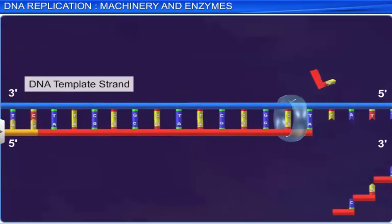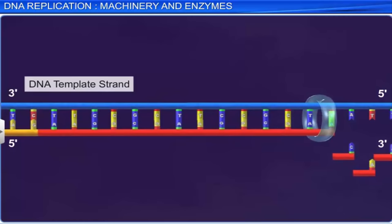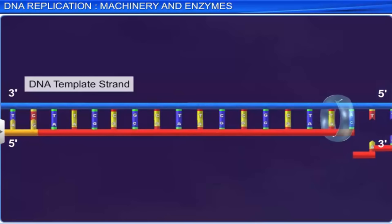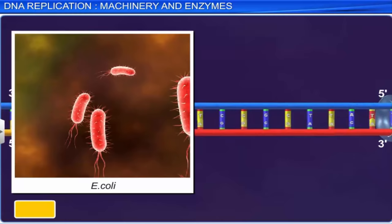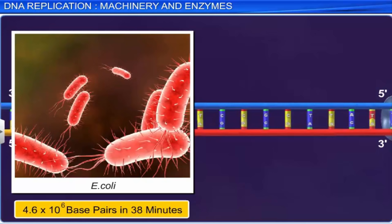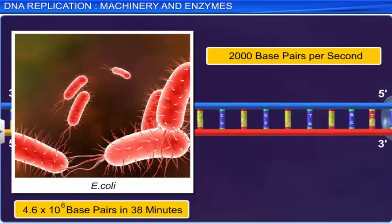The DNA replication process requires a high degree of accuracy, because any error during replication will result in mutations. Thankfully, DNA polymerase is a highly efficient enzyme that catalyzes the reaction not only with accuracy but also very swiftly, polymerizing a large number of nucleotides in a very short span. For instance, E. coli can replicate 4.6 × 10⁶ base pairs of diploid content in 38 minutes — that is, the average rate of polymerization is 2,000 base pairs per second.